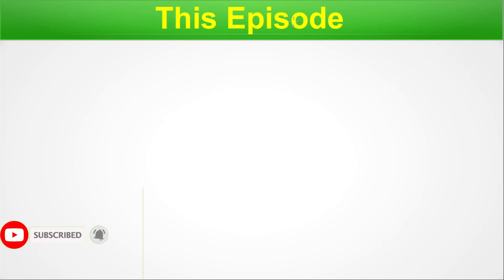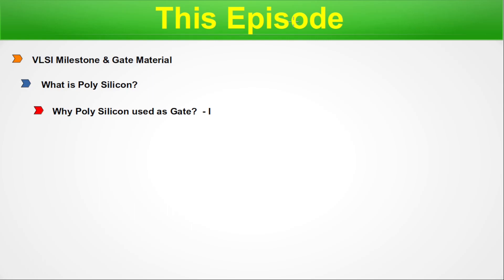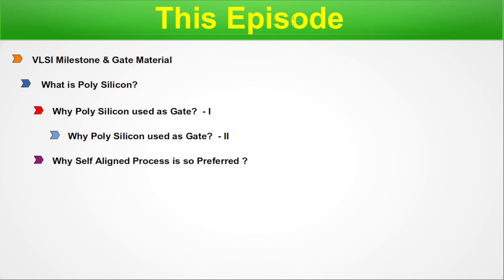Let's take a look at the pointers we are going to discuss in today's episode. First, VLSM milestone and gate material. Second, what is polysilicon? Third, why polysilicon is used as gate? We will also discuss why the self-aligned process is so preferred, since polysilicon is very much aligned with this process. Then we'll cover the poly depletion effect, and finally high-K material and polysilicon.